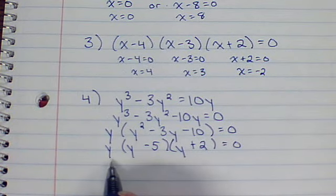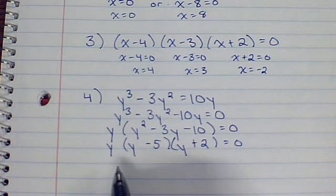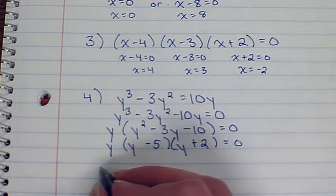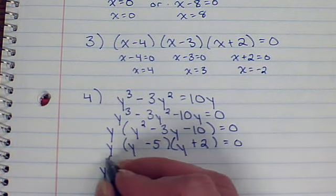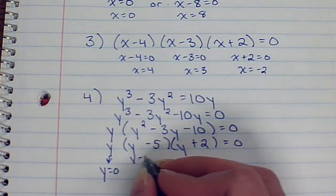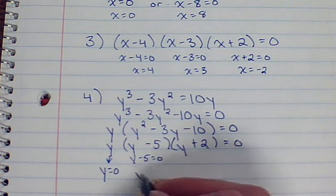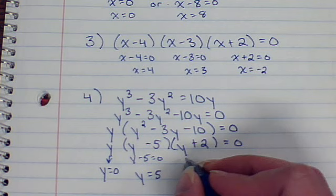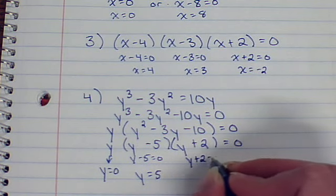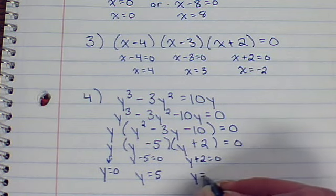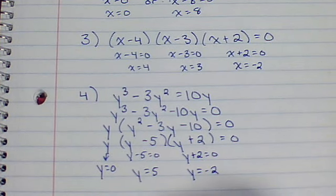We have three different factors, so we'll have three different roots. We'll have y equals 0 for this one. Now, this one, if I set y minus 5 equal to 0, I'll get y equals 5 as an answer. If I set this factor equal to 0, I'll have y equals negative 2 as an answer. I have three answers.